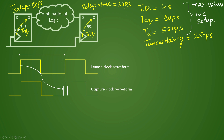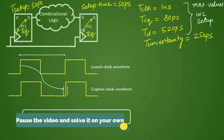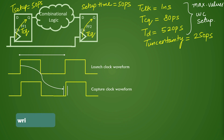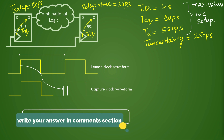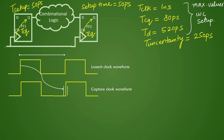If you know the concept of calculating setup timing violation, please pause the video and try to solve this on your own — do let us know the setup slack value you got in the comment section. Note that we do not have any clock latency or network delay values mentioned, because in placement the clock is not propagated. It is ideal, and an estimated value of uncertainty is taken here for reference — that is how the setup calculation is done in the placement stage.